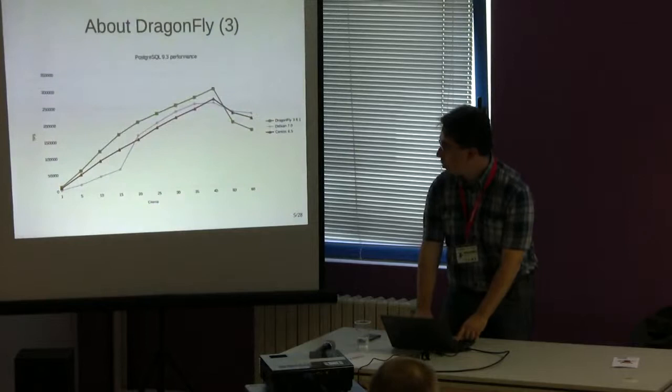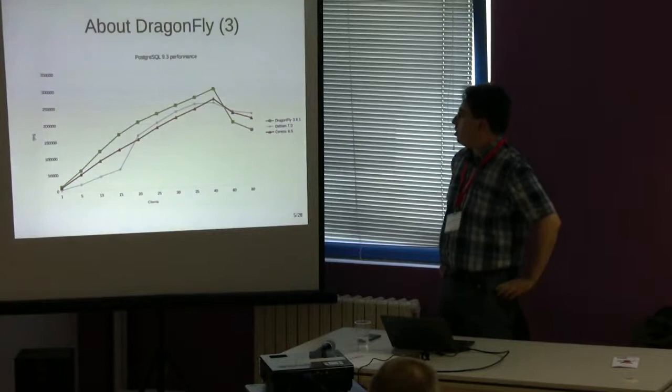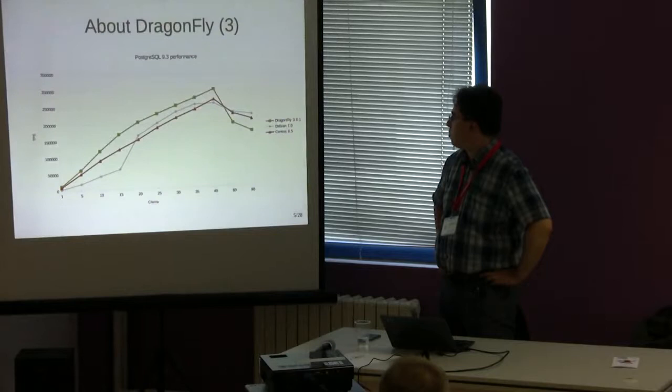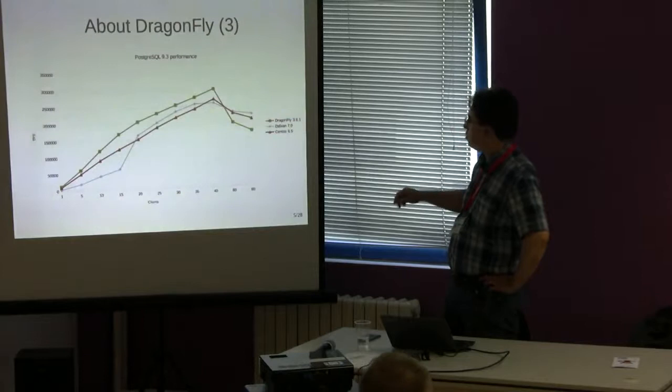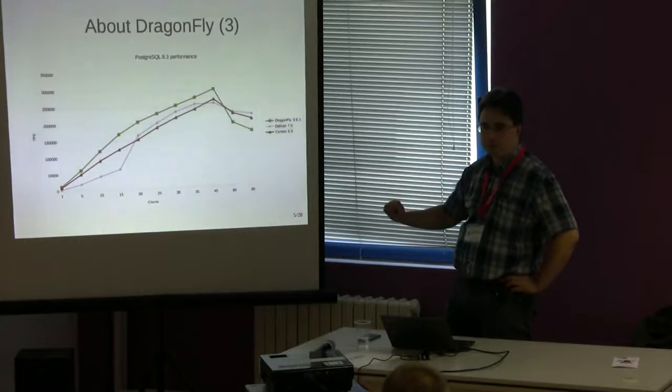A graph is better than many words, and you can see here the scalability of the system. This was a benchmark I ran on a dual Xeon system. On the horizontal axis you can see the number of Postgres clients, and on the vertical axis the number of transactions per second. I compared DragonFly with two competing Linux-based operating systems — DragonFly is the green curve.